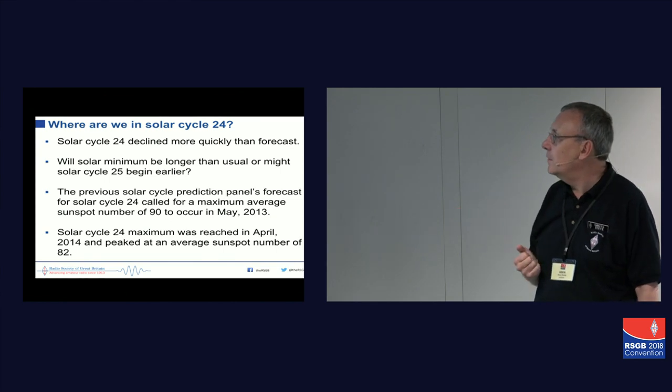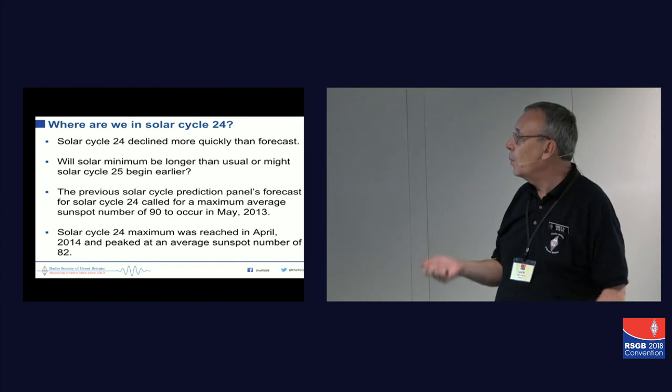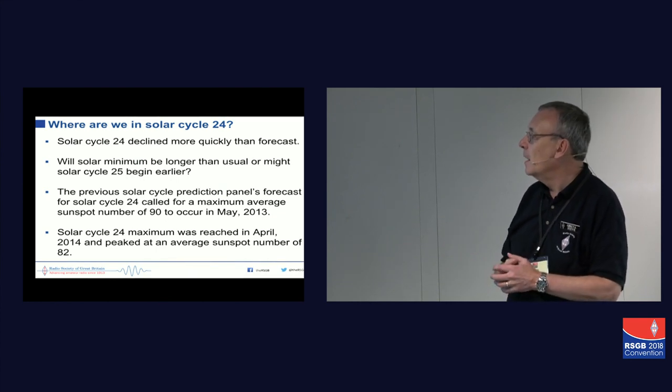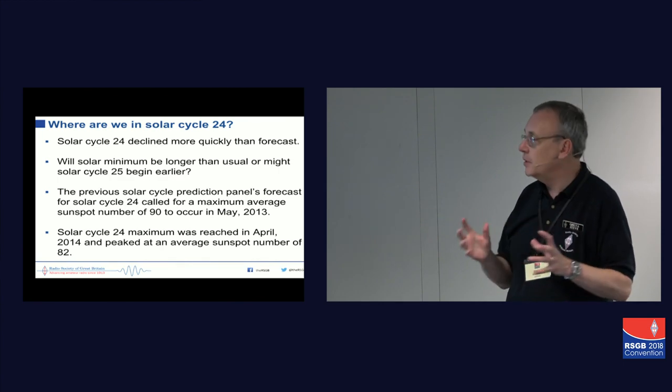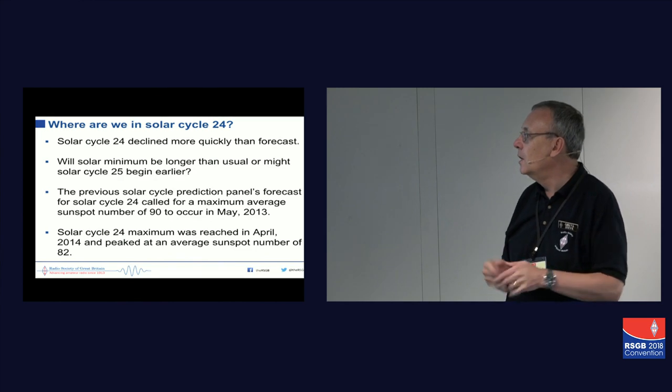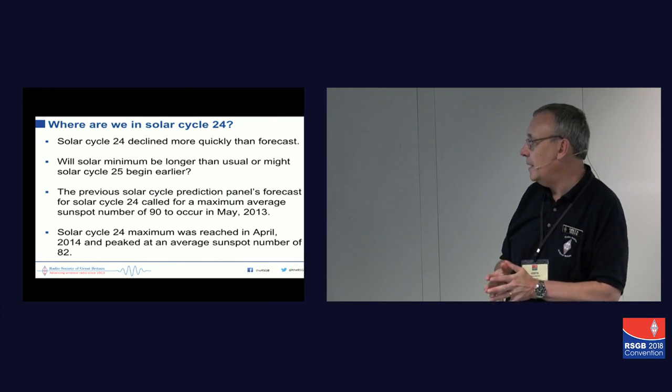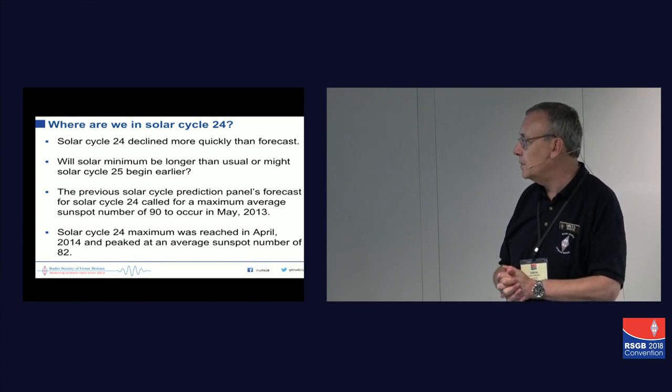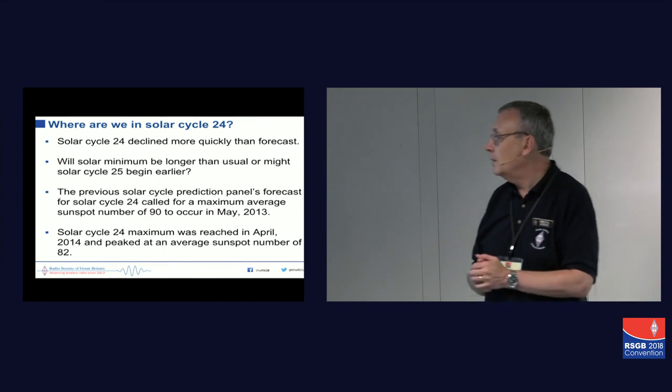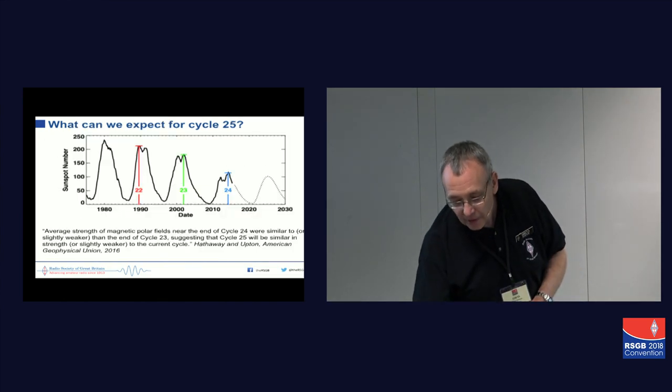Other things. Solar cycle 24 has declined far more quickly than forecast. We need to try and work out whether the solar minimum is going to be longer than usual, or might solar cycle 25 begin earlier? And if you look at some of the predictions that I checked back, the solar cycle prediction panel's forecast for solar cycle 24 was for a maximum average sunspot number of 90 to occur in May 2013. It actually ended up being 82, but it was April 2014. So they got the sunspot number wrong, and they also got the month wrong or the year wrong. And that isn't unusual. It's very, very hard to predict these things.